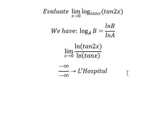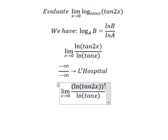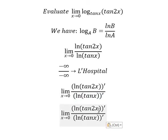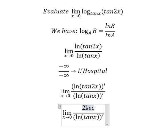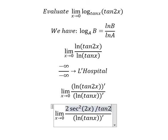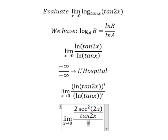So we need to take the derivative of the numerator and the denominator. For this one we have 2 secant squared of 2x over tan 2x. This one we have secant squared of x over tan x.